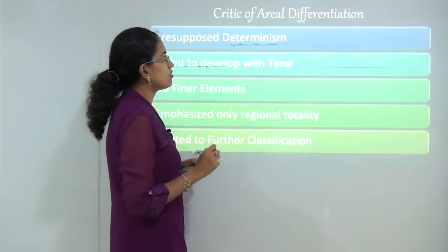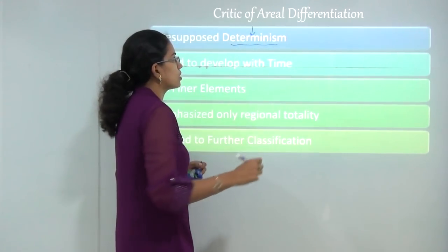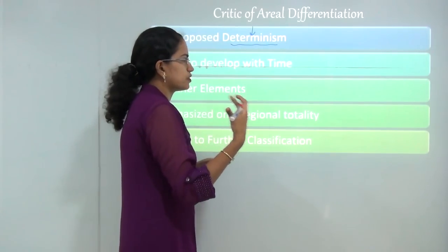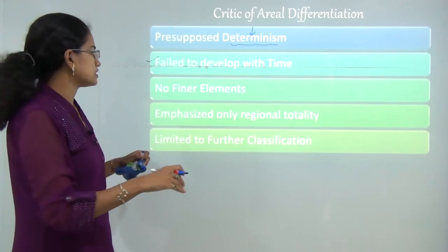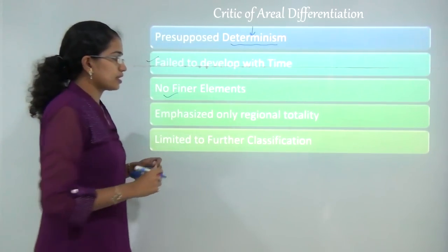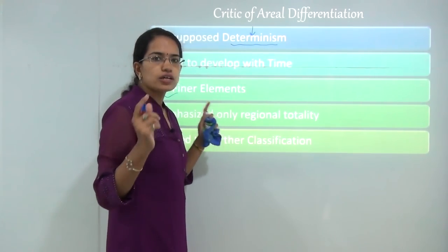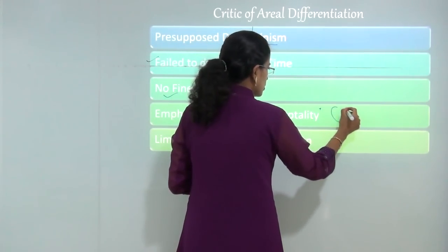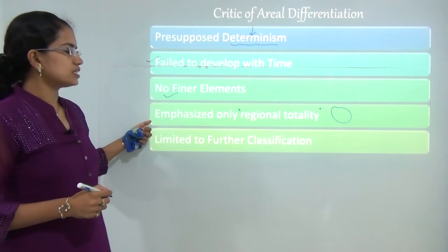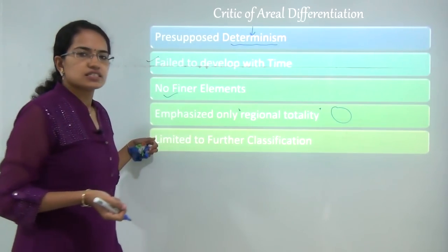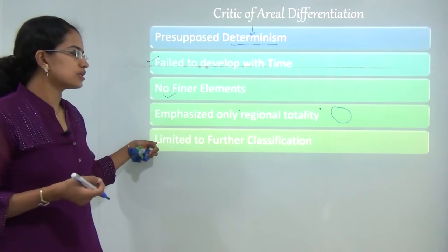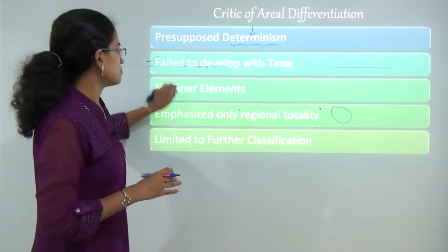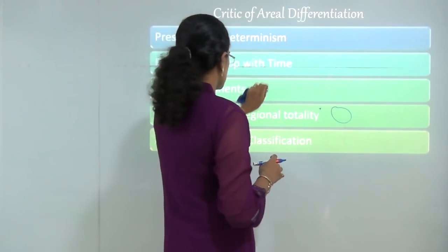It had an inbuilt concept of determinism which could not survive long because, with de la Blache's theory, there was evolution of possibilism. The concept of region, regionalization, and regional synthesis got a lower edge. There were no final elements that it could demarcate. Another important limitation was it tried to focus on the concept of regional totality rather than focusing on individual elements. Under aerial differentiation there was no means to elaborate the classification further. These were the main criticisms led forward for the aerial differentiation theory.